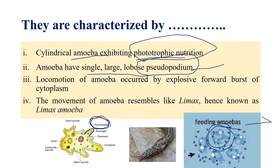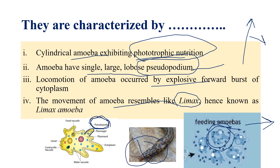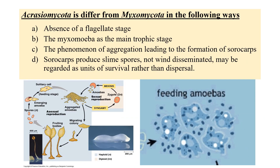The locomotion of the amoeba occurs by the explosive forward burst of the cytoplasm — whichever direction the cytoplasm is pushing, the amoeba moves in that direction. The movement of the amoeba resembles that of a limax, hence it is known as the limax amoeba. Limax is like a snail — a gliding or twisting kind of movement. This amoeba similarly moves in that gliding fashion, so it is called limax amoeba. On the next slide there is a picture explaining this movement in a simple way.